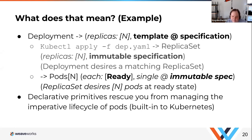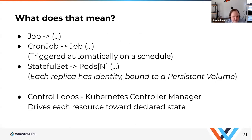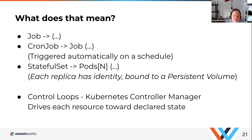A replica set is a definition of a pod spec and a count of replicas. In a replica set, the pod spec is immutable. In a deployment, when you change the pod spec, you get a new replica set and scaling happens — Kubernetes manages those things to make sure your upgrade proceeds smoothly. If something goes wrong and the new pods don't come up, the old ones stay up until someone can address the situation. These are declarative primitives, and they rescue you from managing the imperative lifecycle of your workloads.